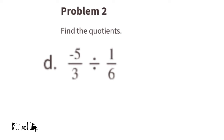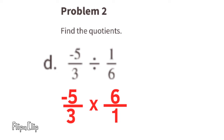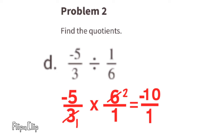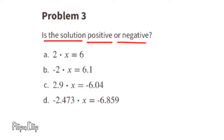Part d: this is a negative divided by a positive, so the quotient is going to be a negative. We change this to a multiplication problem by multiplying by the reciprocal of 1 sixth, which is 6 over 1. Cross-canceling: 3 goes into 3 once and 3 goes into 6 twice. Now we have negative 5 times 2 over 1 times 1, which is negative 10 over 1, equal to negative 10.